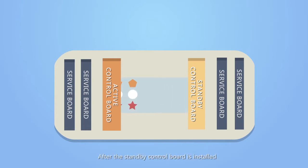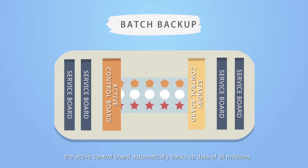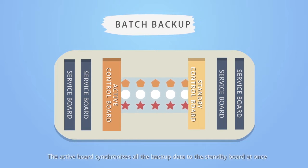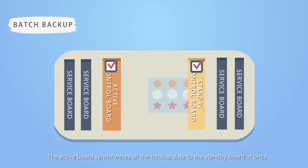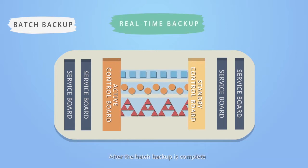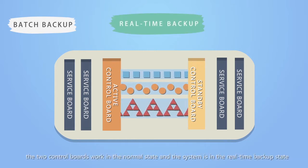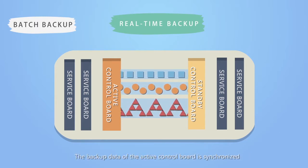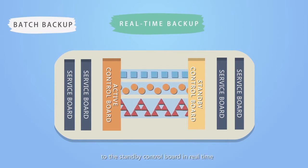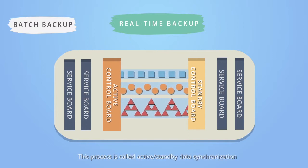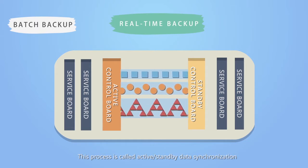After the standby control board is installed, the active control board automatically backs up data of all modules to the standby control board in batches. The active board synchronizes all the backup data to the standby board at once. After the batch backup is complete, the two control boards work in the normal state and the system is in the real-time backup state. The backup data of the active control board is synchronized to the standby control board in real-time.